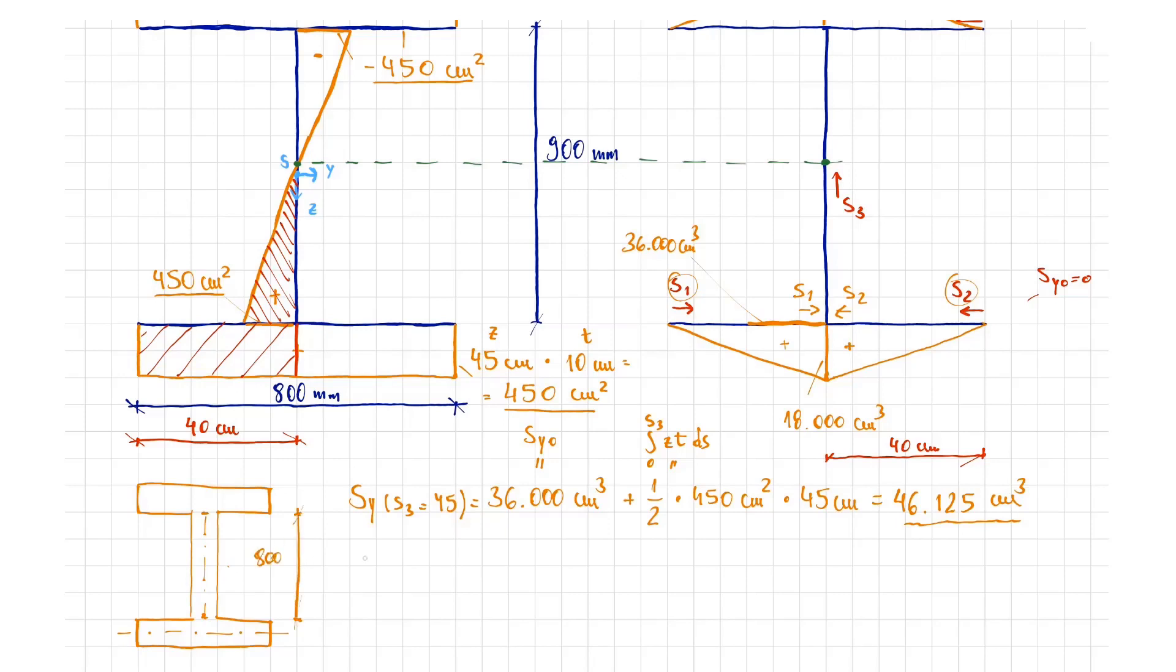To be more precise, we should take the Zt distribution of the web to the top of the bottom flange. This way, the Zt area considered for this is only 400 square centimeters by 40 centimeters.